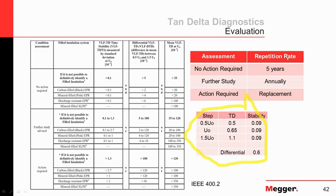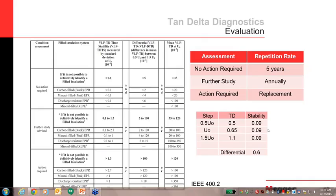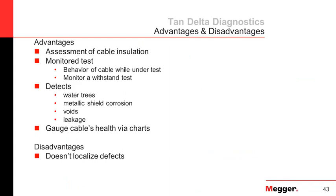When running a tan delta test, you get a really good assessment of your cable insulation. This test is monitored — at each voltage level, you can see how the cable is behaving. You can even use the tan delta test to monitor a withstand test, getting insight rather than doing a completely blind test. Tan delta is used to detect water trees, metallic shield corrosion, voids, and anything that causes leakage current. You can gauge cable health using the IEEE charts. Unfortunately, tan delta diagnostics does not localize any of your defects.